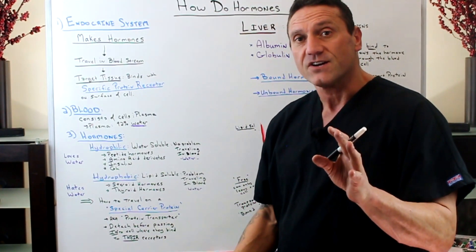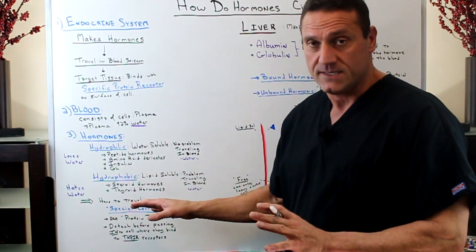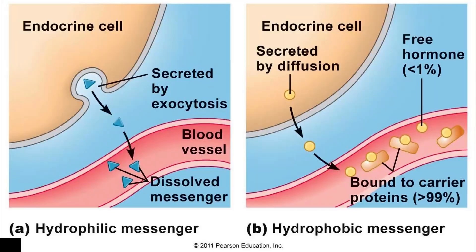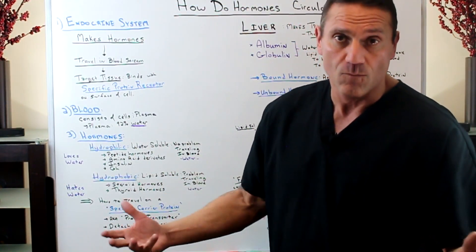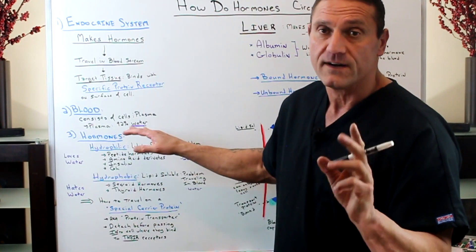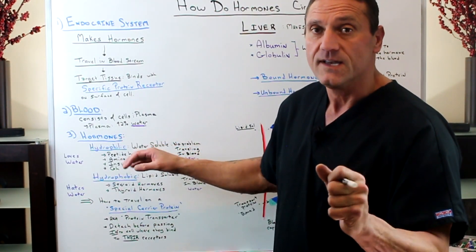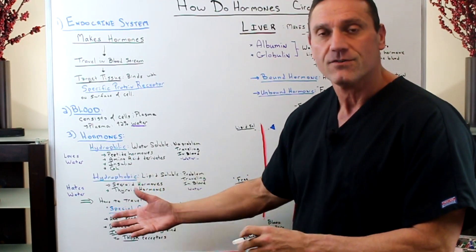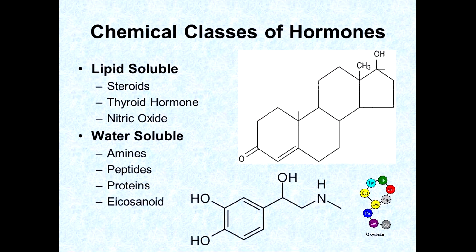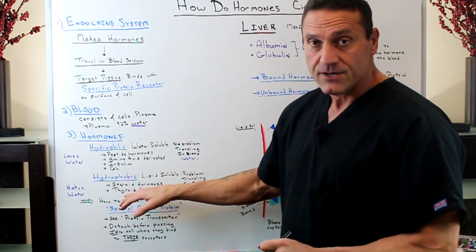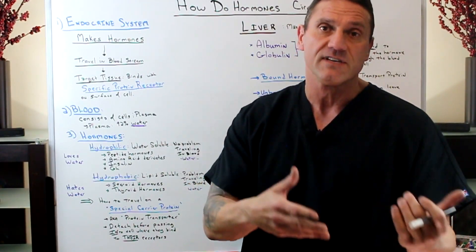The hydrophobic ones do not like water — they're lipid soluble, they're fat, it's oil. So they have a problem traveling in the bloodstream because blood is 92% water. These are your steroid hormones: the androgens, the estrogens, testosterone, progesterone, the DHTs, and the thyroid hormones.